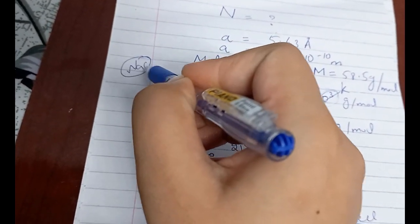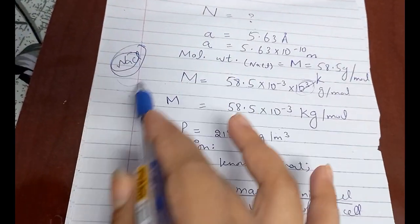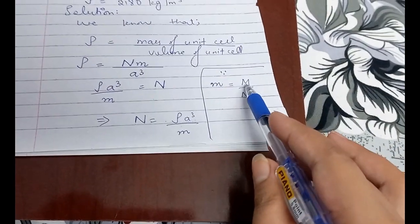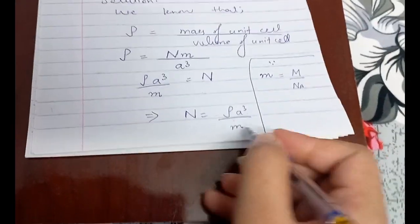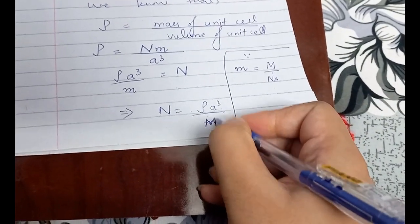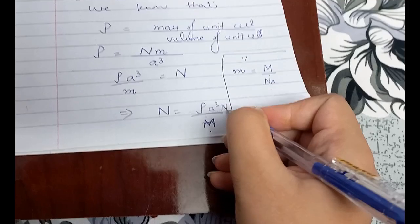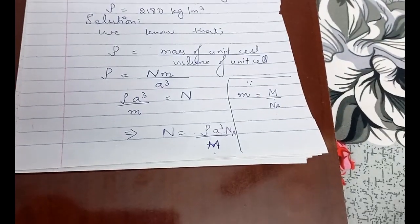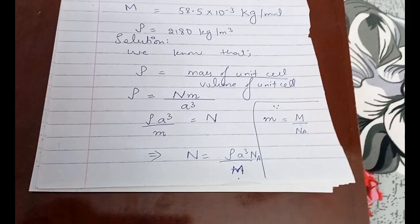We'll simply plug this value right into this equation, so capital M is in the denominator and NA will jump to the numerator. Let's quickly put their values and we'll get what we wanted.